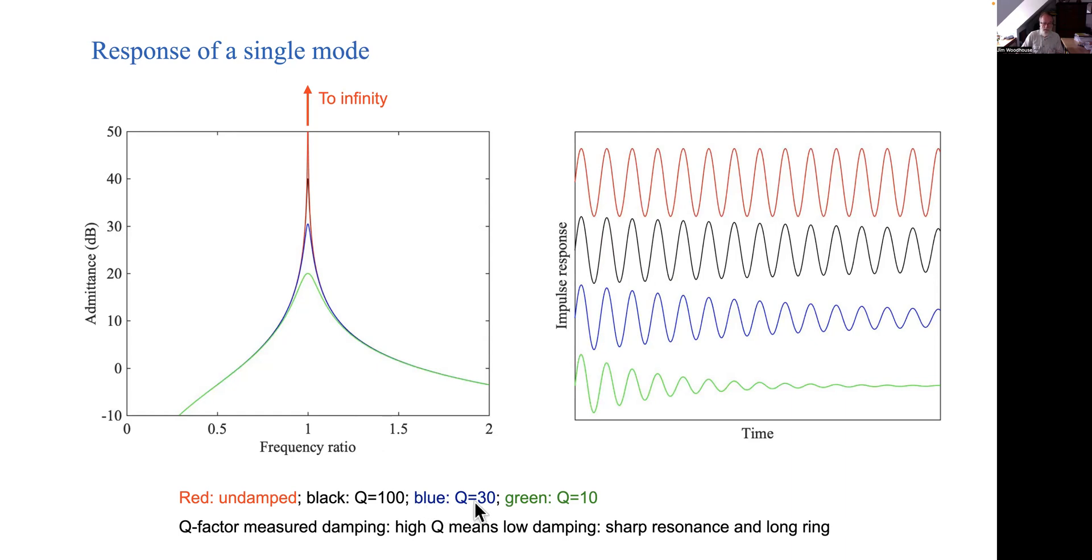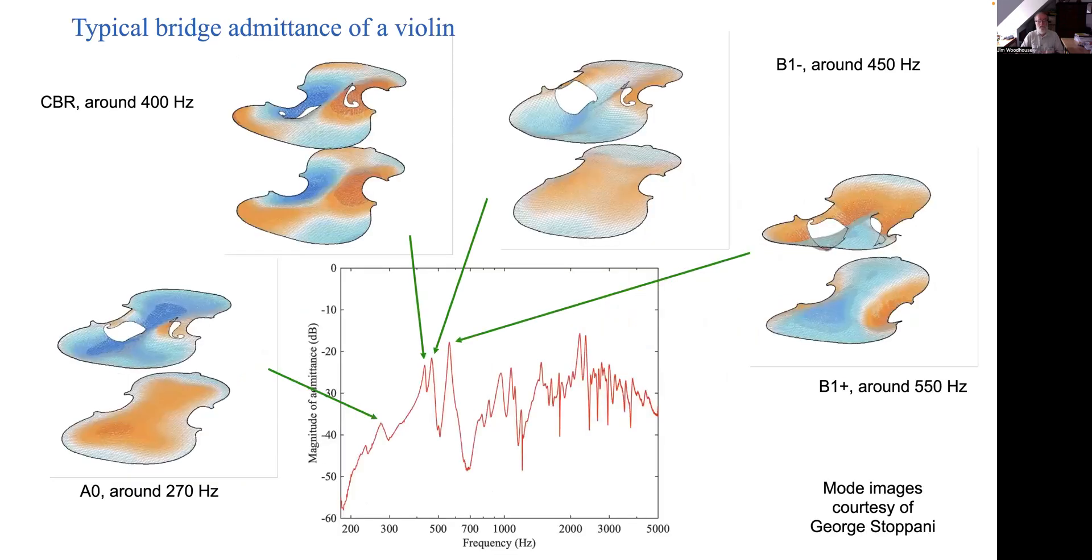For what it's worth, the typical Q factors for a violin body mode would be most like the blue curve here. Something around about a Q factor of 30 would be typical. So one mode of a violin might produce a peak rather like this in our frequency response.